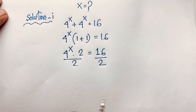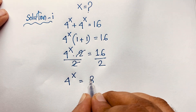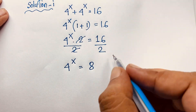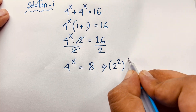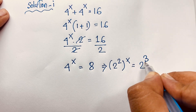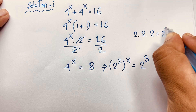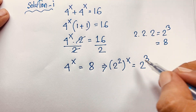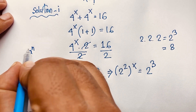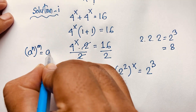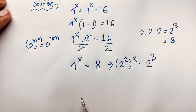Dividing both sides by 2, the 2 cancels out and we get 4 to the power x is equal to 8. Now, 4 can be written as 2 to the power 2, so we have (2 to the power 2) to the power x. And 8 is 2 times 2 times 2, which is 2 to the power 3. Applying the exponential formula (a to the power n) to the power m equals a to the power nm, we get 2 to the power 2x.